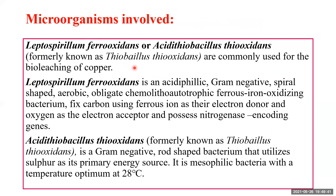Microbes are used in the second step where Fe²⁺ is re-oxidized to Fe³⁺ to regenerate it, and this two-step cycle is repeated to extract out the metal. The organisms involved are Leptospirillum ferrooxidans and Acidithiobacillus thiooxidans. Leptospirillum ferrooxidans is an acidophilic, gram-negative, spiral-shaped, aerobic, obligate chemo-lithotrophic, ferrous iron-oxidizing bacterium. It fixes carbon using ferrous iron as the electron donor and oxygen as the electron acceptor, and possesses nitrogenase-encoding genes.